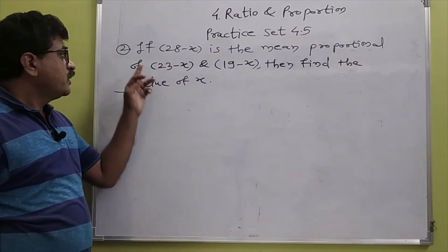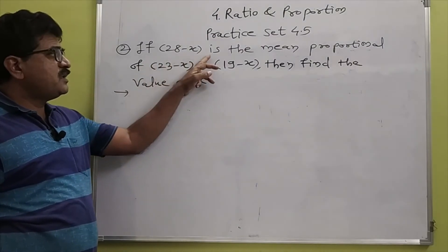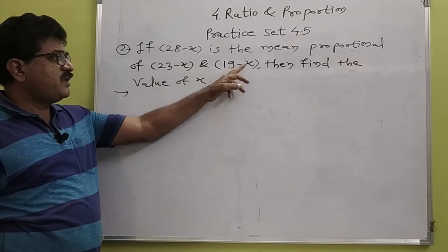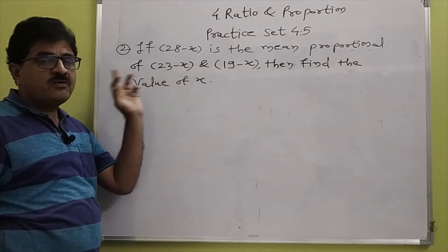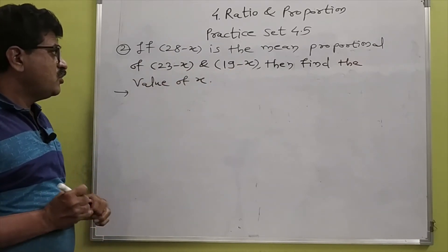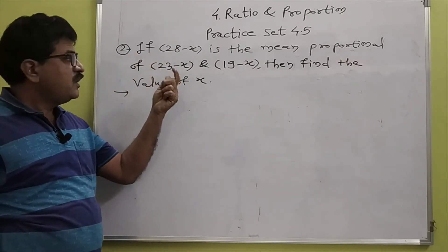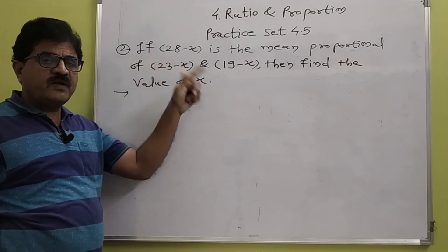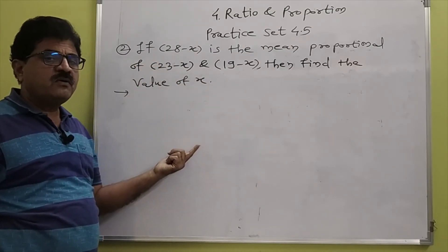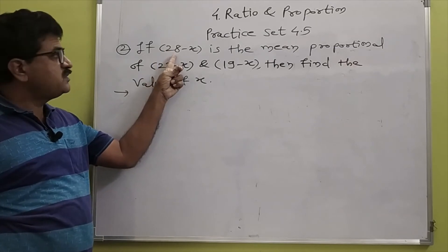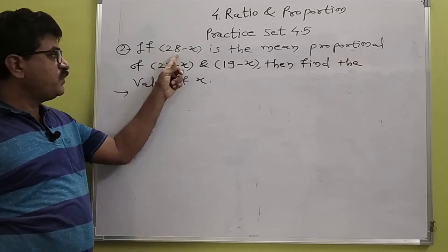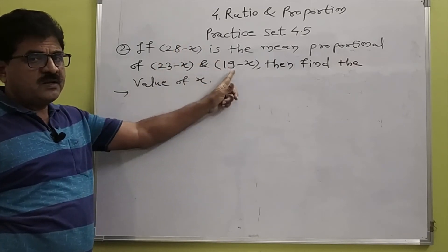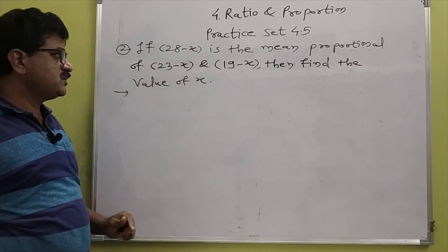Question number 2. If 28 minus X is the mean proportional of 23 minus X and 19 minus X, then find the value of X. We know the formula: if B is the mean proportional of A and C, then B squared equals A into C. Here the value of B is 28 minus X.